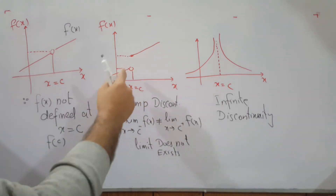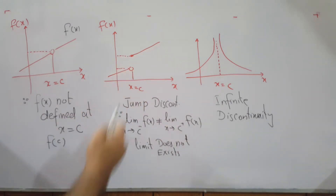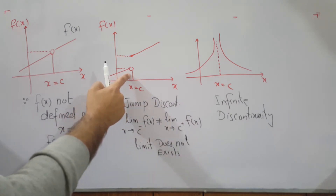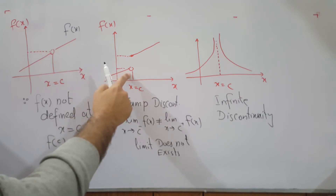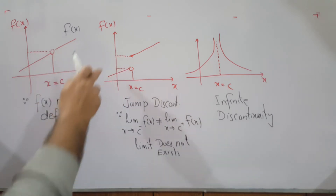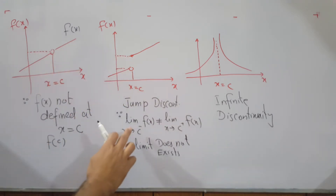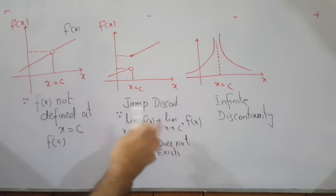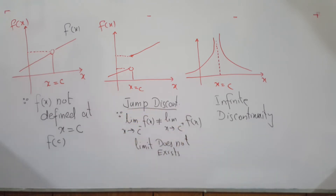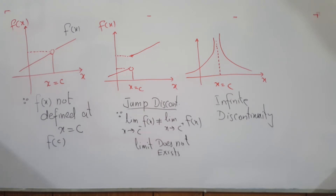Another type: if the graph is such that as x approaches c from the left side, the value is one thing, and from the right side it is something different — so the left-hand and right-hand limits are not the same, meaning the limit does not exist — this is called jump discontinuity.